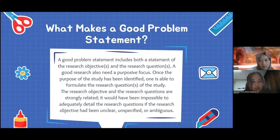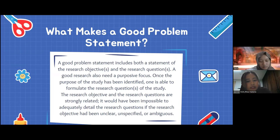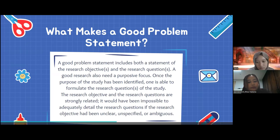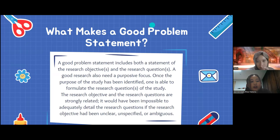Next is what makes a good problem statement. A good problem statement includes both a statement of the research objectives and the research questions. A good research also needs a purposive focus. Once the purpose of the study has been identified, one is able to formulate the research questions. The research objective and research questions are strongly related — it would be impossible to adequately detail the research questions if the research objective had been unclear, unspecified, or ambiguous.